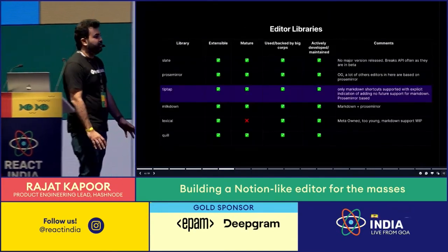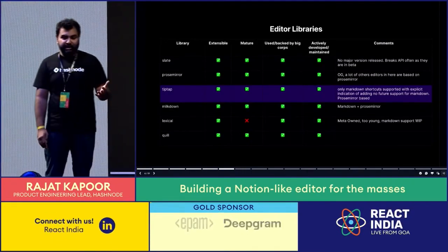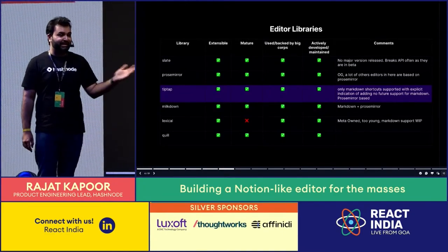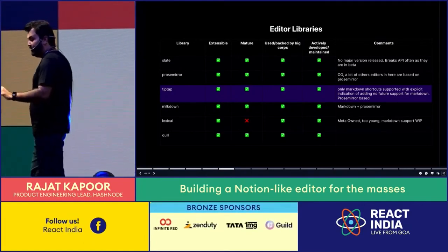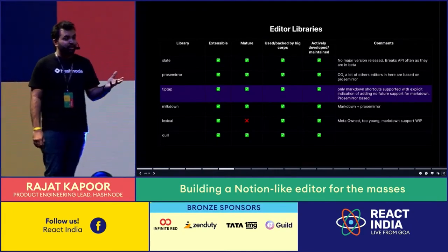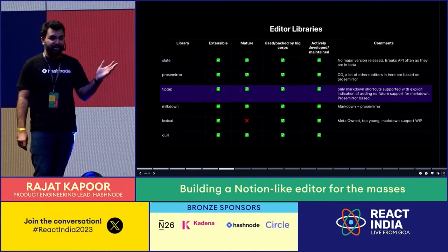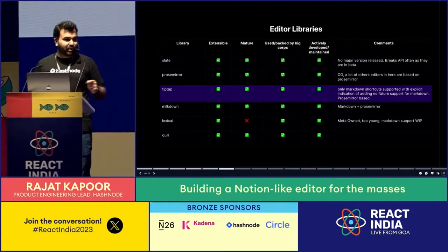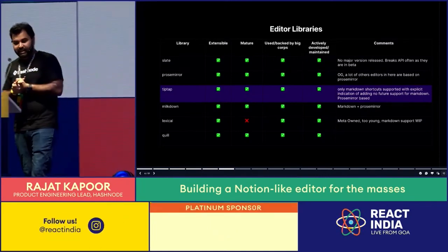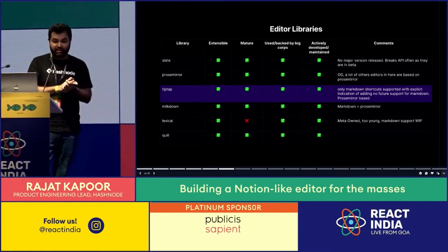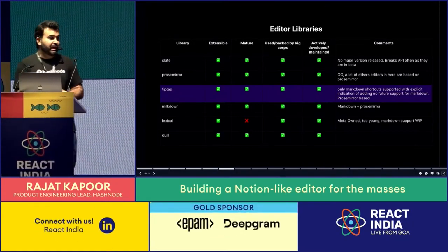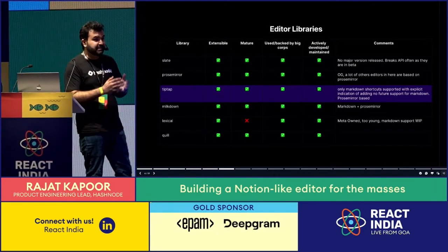Last year when we decided to revamp Hashnode's editor, we looked at all these open source libraries. We're not a very big team, so we had to go open source. We had a few criteria: it should be extensible so you can build on top of it easily, it should be mature enough and backed by big corporations so it doesn't go unmaintained, and it should be actively developed. Slate is my personal favorite. There's Lexical from Meta, looking very promising. But we went ahead with TipTap — it has very easy extensibility and nice support for both React and Vue.